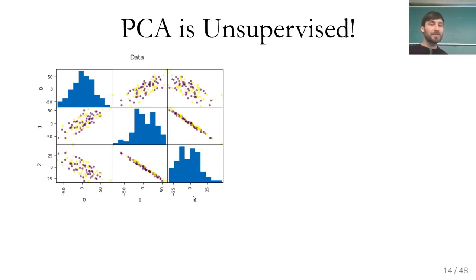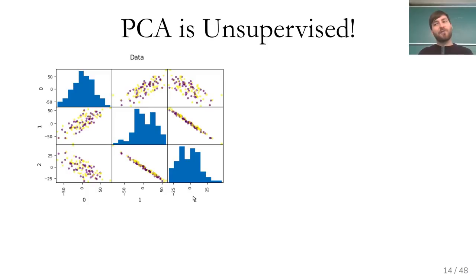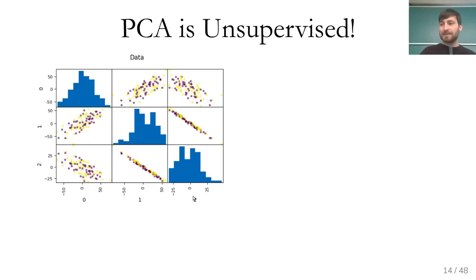One caveat is that PCA is unsupervised — this can be a good thing or a bad thing. Here's a three-dimensional synthetic dataset made to make PCA fail. The direction that distinguishes the purple from the yellow points is orthogonal to the direction of maximum variance, so PCA will throw away all the important information.